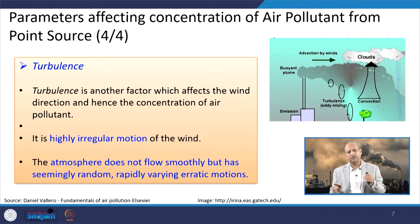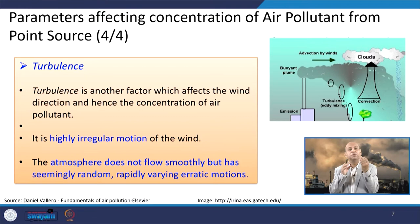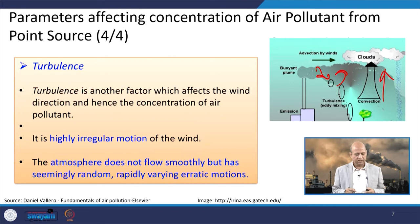Turbulence is a key parameter: the normal wind direction provides advection, but turbulence creates pockets of air moving in directions other than the main flow — eddies go up and down, causing churning in the fluid motion. This advection by wind in the horizontal, convection in the vertical due to temperature gradients, and turbulent eddy mixing all add to the dispersion, diffusion, and dilution of pollutants.